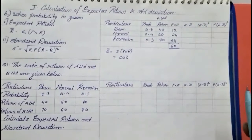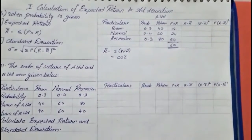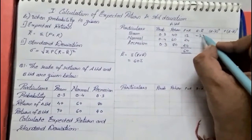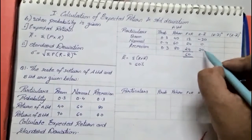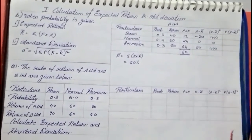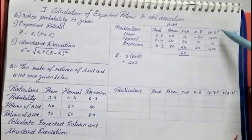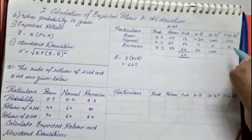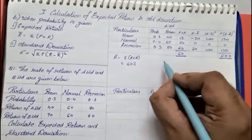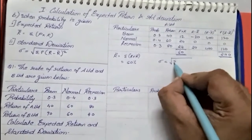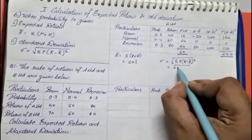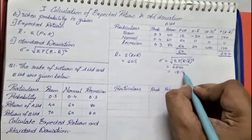Now let us find the standard deviation for A Limited. The next column is r − r̄: subtracting 60 from each return gives −20, 0, and +20. Squaring those gives 400, 0, and 400. We then multiply by probability to get p(r − r̄)²: 120, 0, and 120. The total is 240. Standard deviation is the square root of Σp(r − r̄)² = √240 = 15.49%.